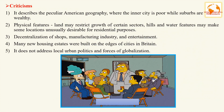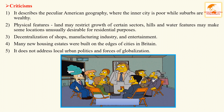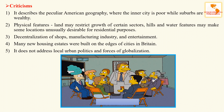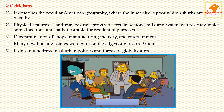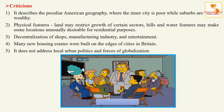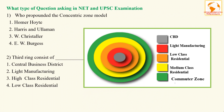The model has been challenged by many contemporary urban geographers. First, it describes a particular American geography where the inner city is poor while suburbs are wealthy. Second, physical features like hills and water may restrict the growth of certain sectors. Third, decentralization of shops, manufacturing industries, and entertainment — with many new housing estates built on the edge of cities in Britain — is not accounted for. Lastly, it does not address local urban politics or the forces of globalization.